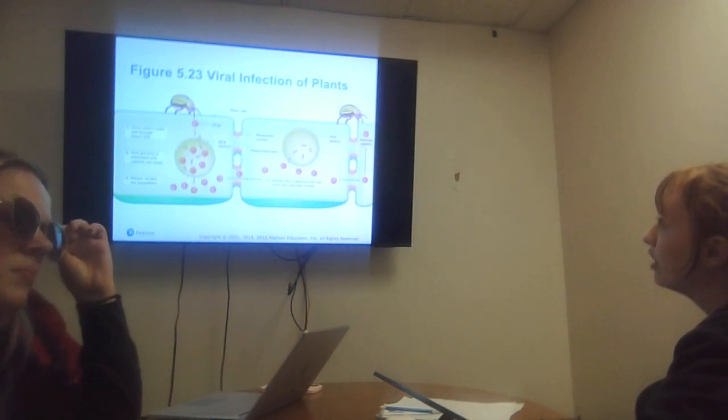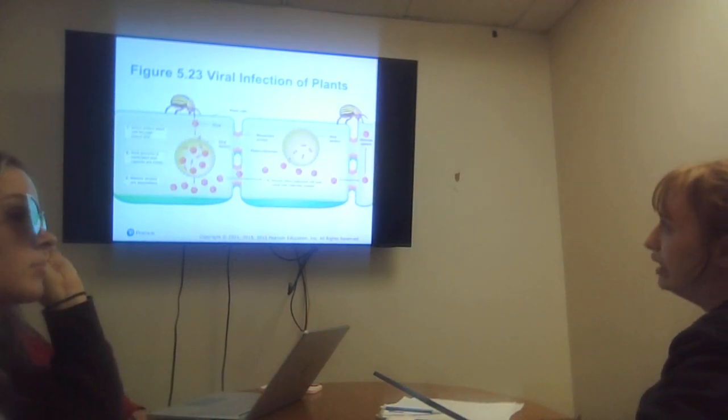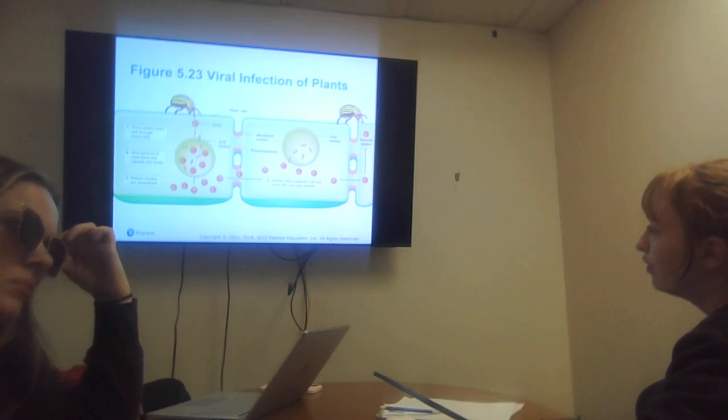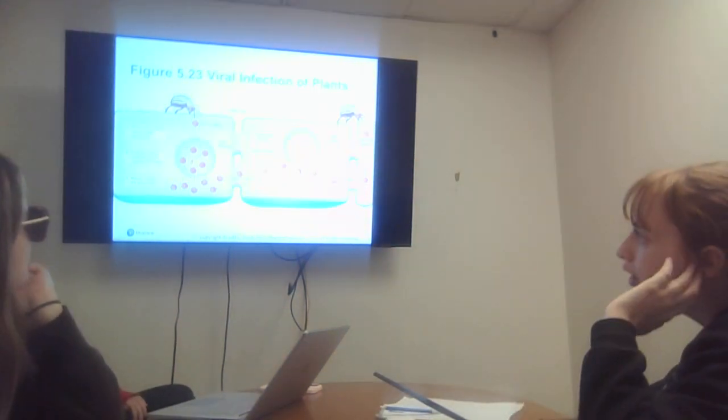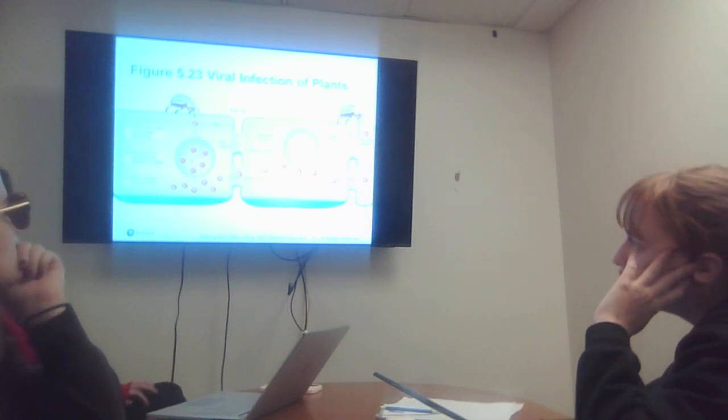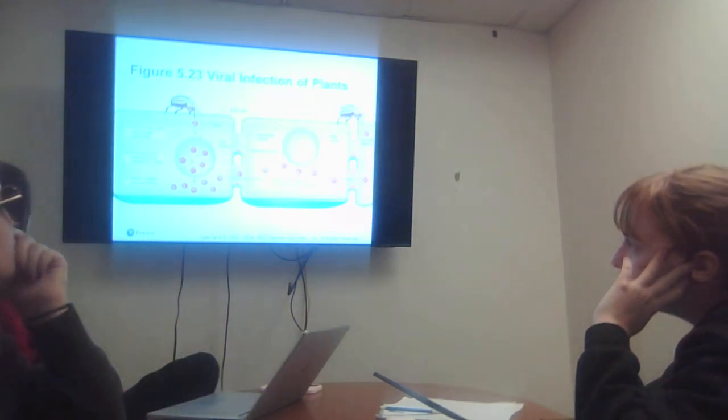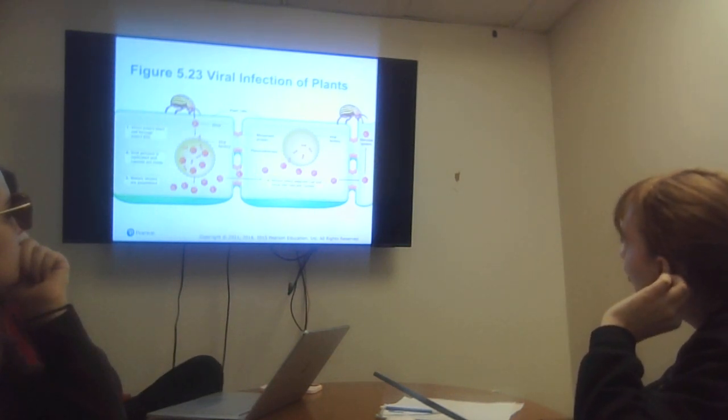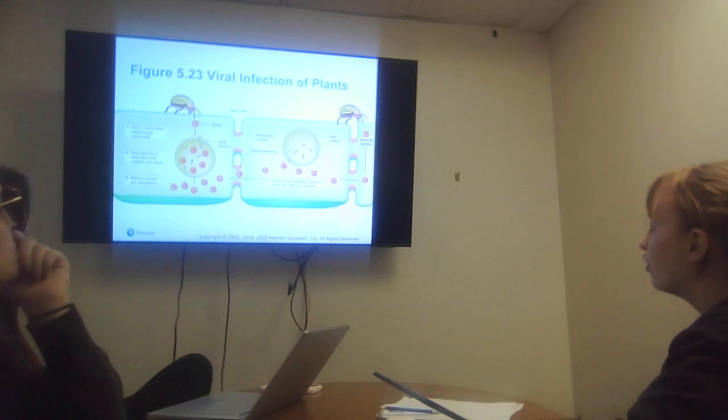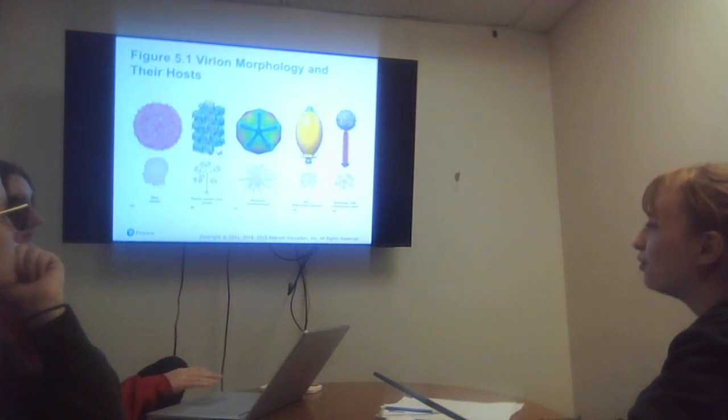This is viral infection of plant. It starts with the virion entering the plant cell through an insect bite. The viral genome is replicated and capsids are made. The mature virus assembles. Then virions infect the adjacent cell and move into the vascular system.